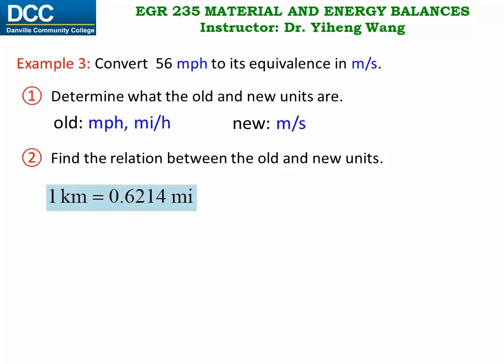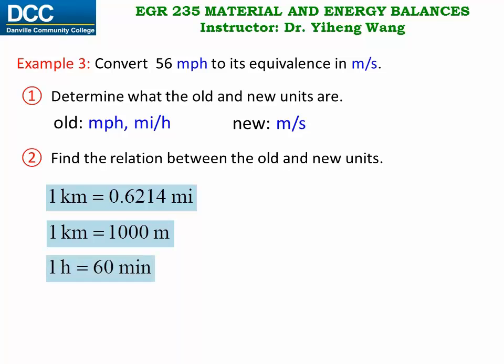The direct relation between mile and the SI unit for length is between mile and kilometer: one kilometer equals to 0.6214 miles. And because kilometer is an SI unit with a prefix of kilo — meaning a thousand — one kilometer equals to 1000 meters. We also need the relation between hour and second: one hour equals to 60 minutes, and one minute equals to 60 seconds. We're going to use all four of these equalities in our unit conversion.